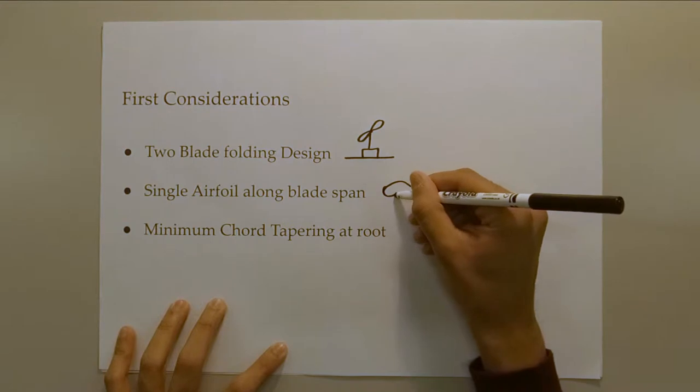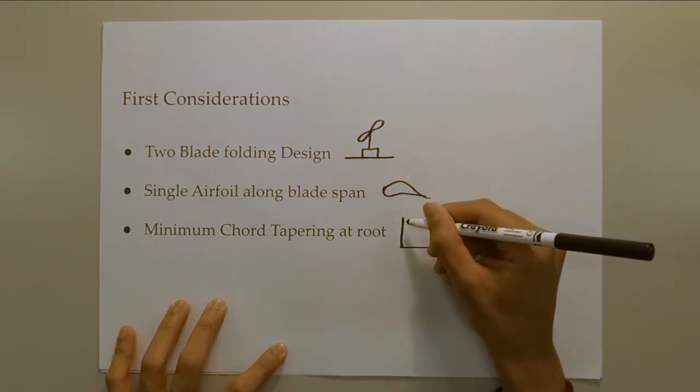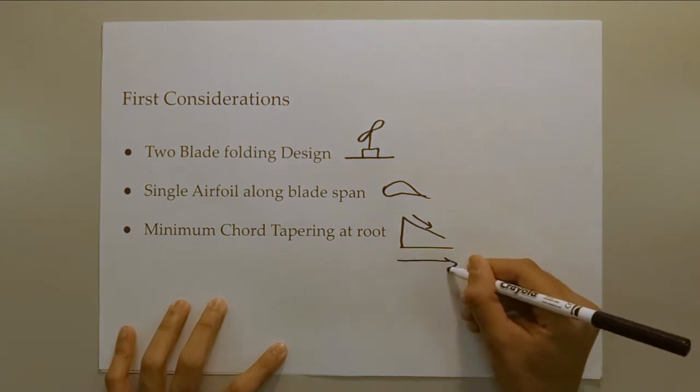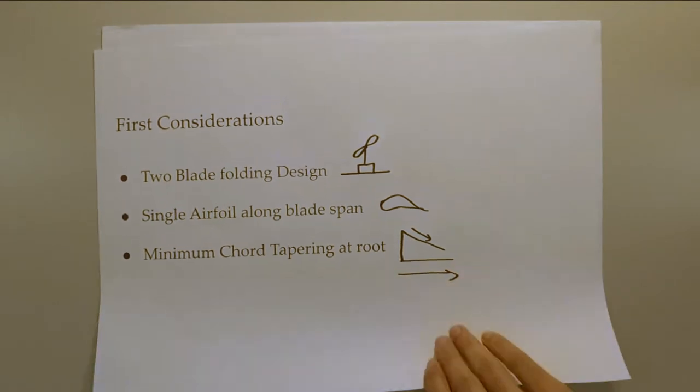A single airfoil along the blade was also chosen, as switching airfoil mid-span often results in distorted and bumpy surfaces. Lastly, we chose to have minimum chord taper at the root due to maximum stresses occurring at the root.